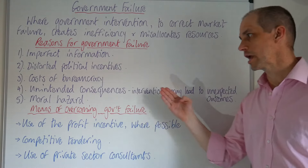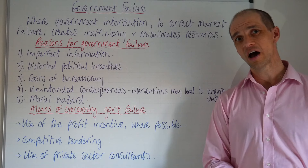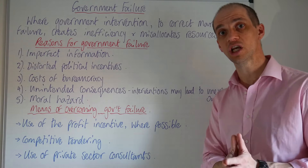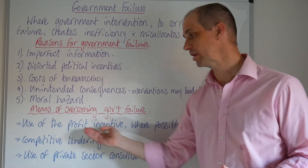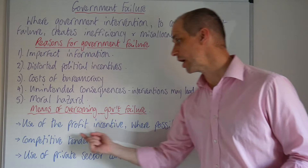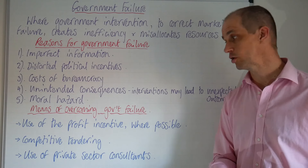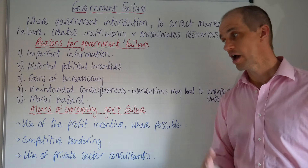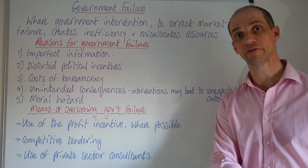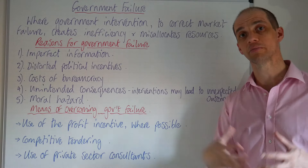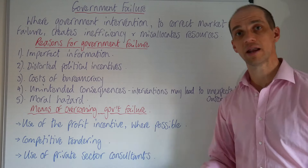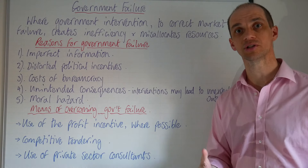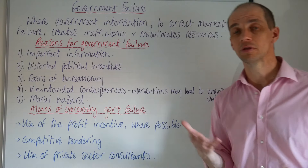Finally, let's look at how to overcome the potential for government failure. You could set various targets for whatever political department is undertaking a project. It might also help to use a profit incentive when it comes to capital investment projects. It may also incorporate private and public sector partnerships, engaging the private sector — since they're very good at making a profit — to help support public sector organisations to strive for efficiency.